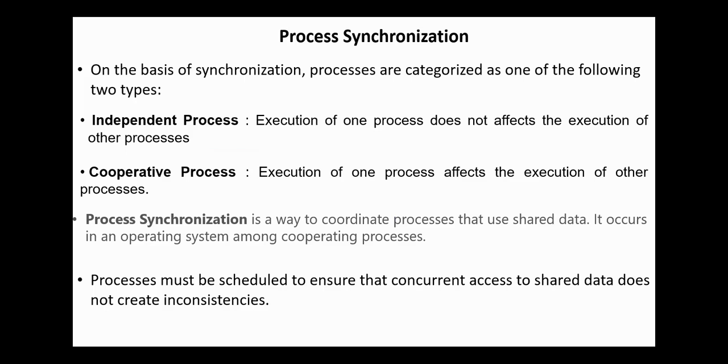In Chapter 3, we classify the processes into two types, independent and cooperative. In independent processes, execution of one process does not affect the execution of other processes, while in cooperative processes, execution of one process affects the execution of other processes.